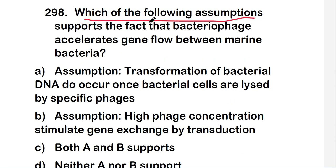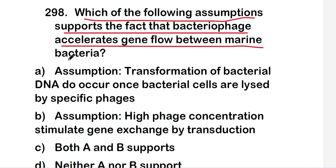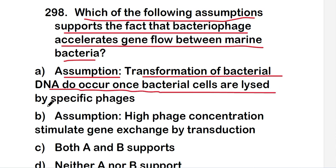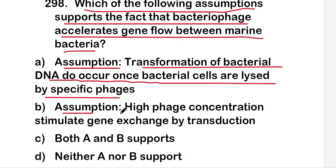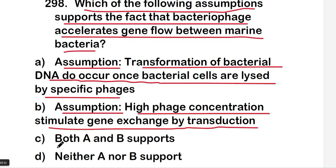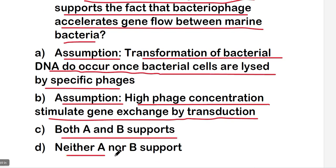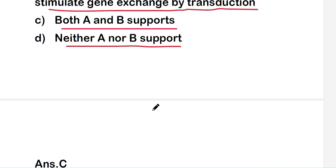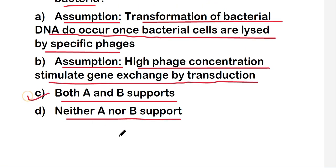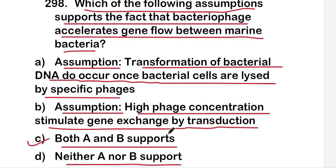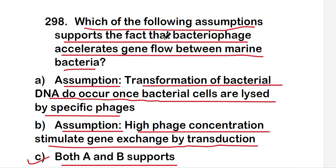Next question: which of the following assumptions support the fact that bacteriophage accelerates gene flow between marine bacteria? Assumption A: transformation of bacterial DNA occurs once bacterial cells are lysed by specific phages. Assumption B: high phage concentration stimulates gene exchange by transduction. Options are A only, B only, both A and B, or neither. The right answer is option C, both A and B support this fact.